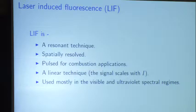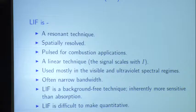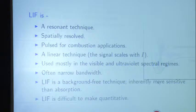LIF is used mostly in the visible and ultraviolet spectral regimes. If you try to do it in the infrared, there's so much background radiation it can hinder what you're trying to do. The nice thing about the ultraviolet is all that thermal radiation — Planck blackbody radiation — is gone. Often it's narrow bandwidth. It's a background-free technique, and you've got to love those. It's difficult to make it quantitative, but you can do that.